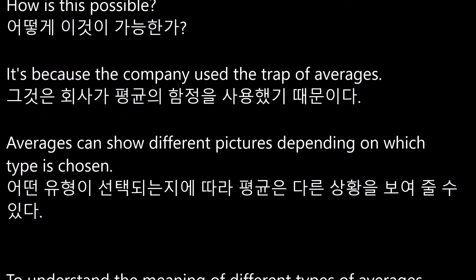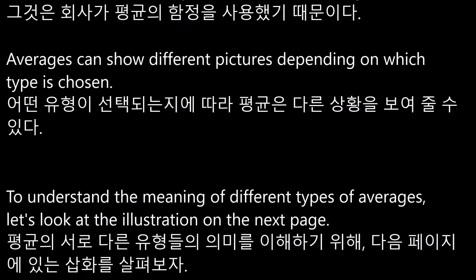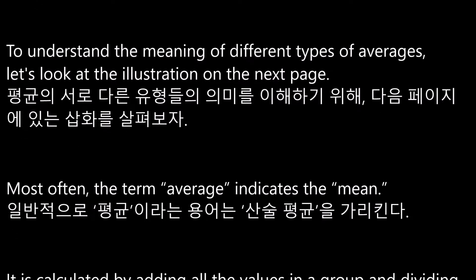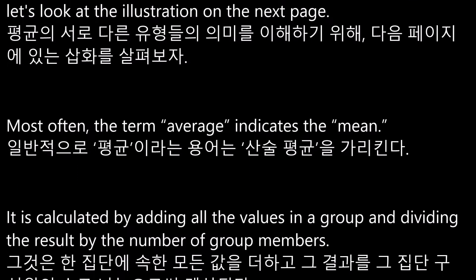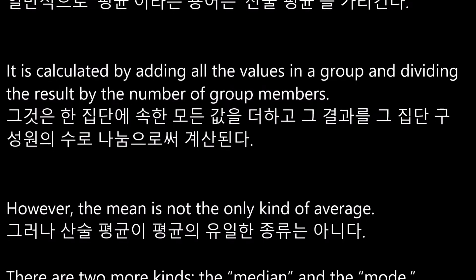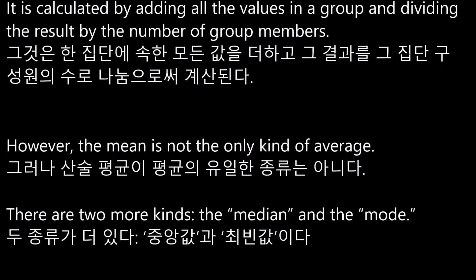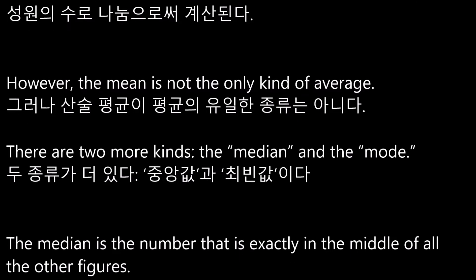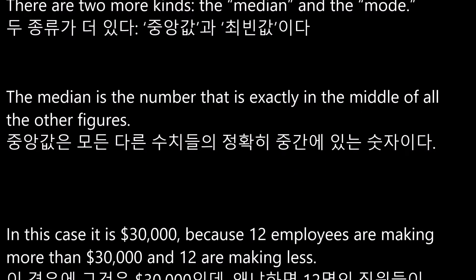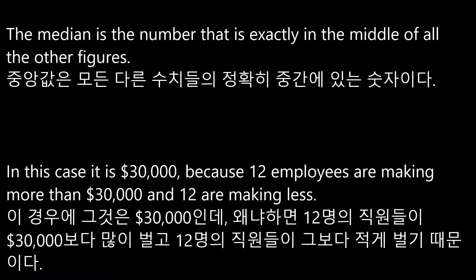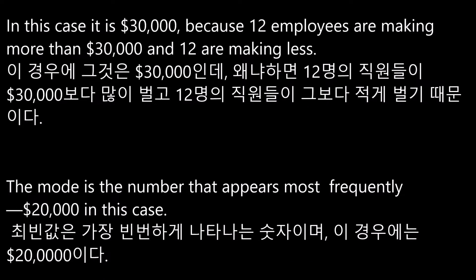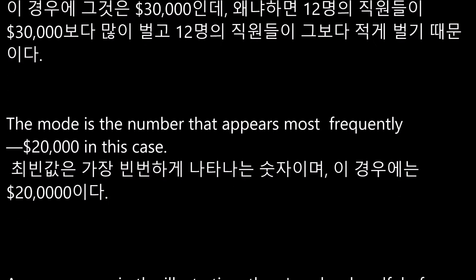Averages can show different pictures depending on which type is chosen. Most often, the term 'average' indicates the mean, calculated by adding all the values in a group and dividing by the number of group members. However, the mean is not the only kind of average — there are two more: the median and the mode. The median is the number exactly in the middle of all the figures; in this case, it is $30,000 because 12 employees are making more and 12 are making less. The mode is the number that appears most frequently — $20,000 in this case.